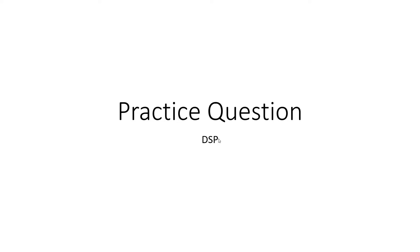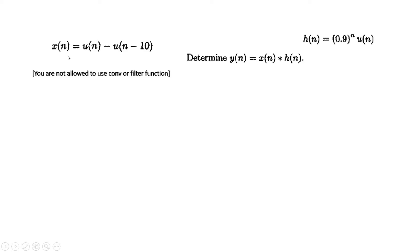Hello friends, here comes another very important practice question for DSP. The question is: suppose x(n), the input sequence for a system, is given as u(n) minus u(n-10), and the impulse response of this system is given as h(n) = 0.9^n * u(n). You have to calculate y(n), which is basically the output of the system — that is, the convolution of x(n) and h(n).